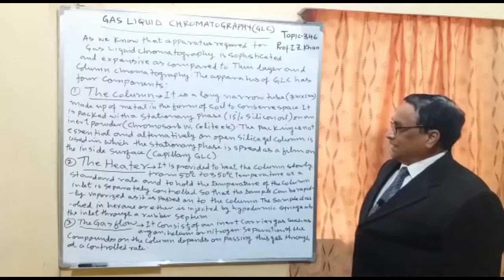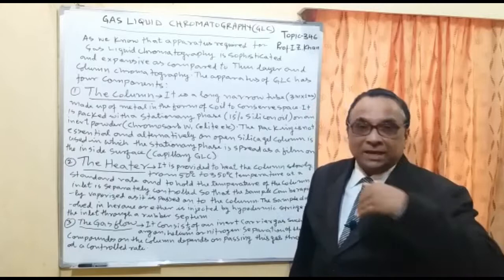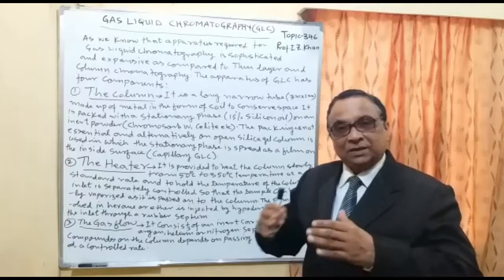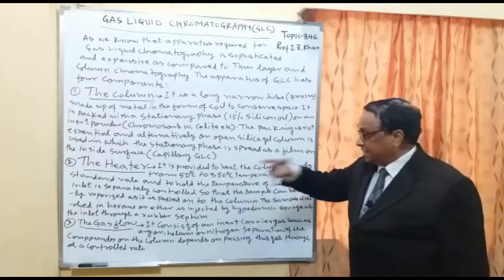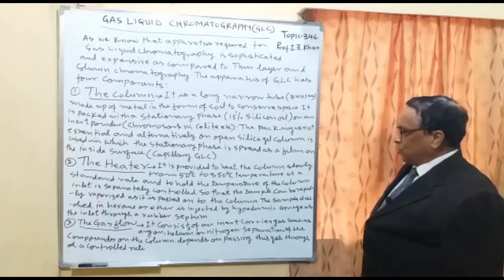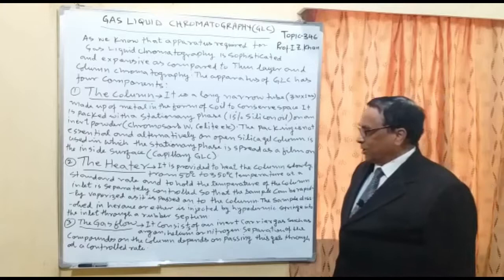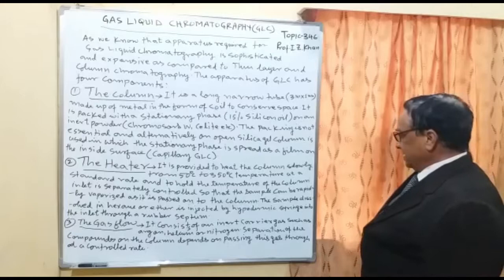Component number two is the heater. The heater provides very high temperature so that even if the component is in liquid form, it changes into vapor form. It heats the column slowly from 50 degrees centigrade up to 350 degrees centigrade at a standard rate. The column inlet temperature is separately controlled so that the sample can be rapidly vaporized. The sample, dissolved in hexane or ether, is injected by a hypodermic syringe into the inlet through a rubber septum.